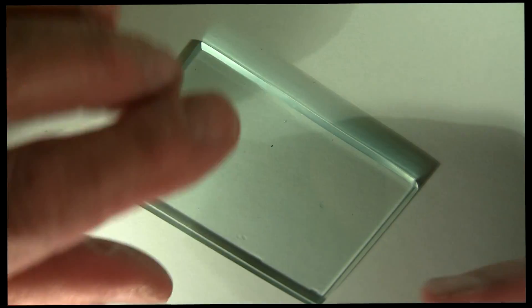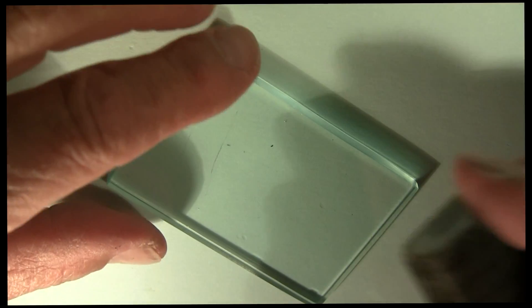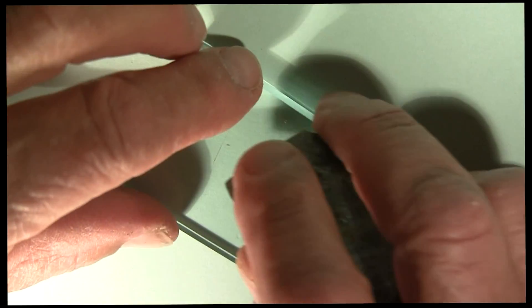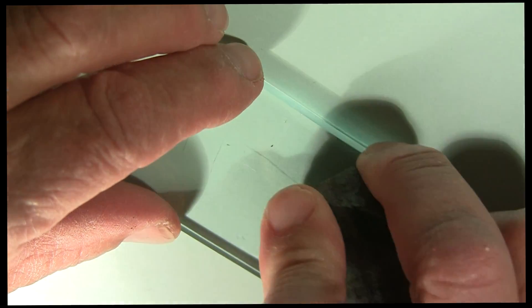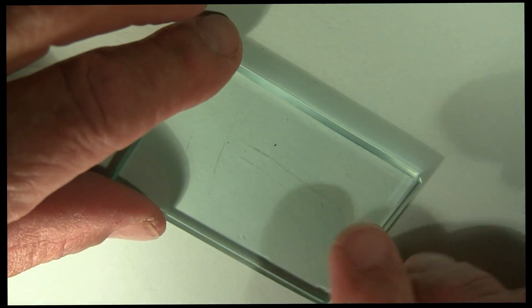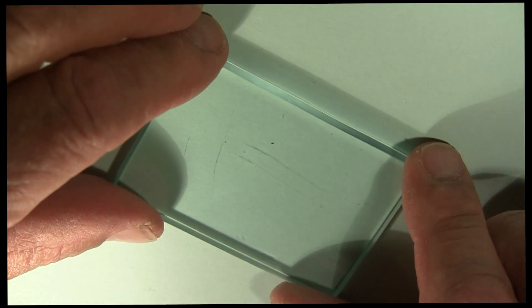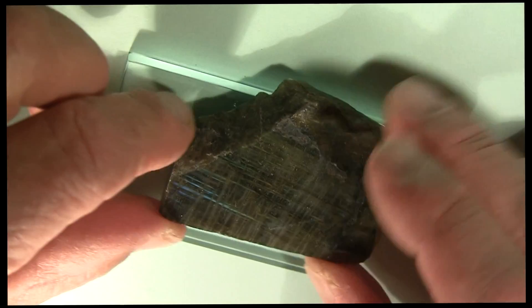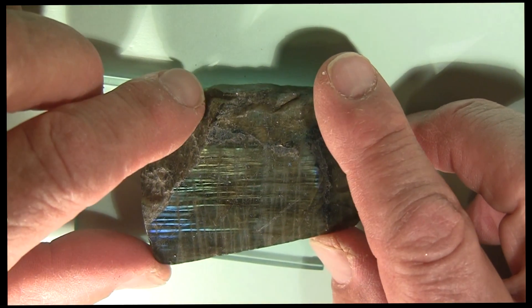So we'll reverse this and see if it scratches the glass. Find a nice sharp edge there. Rub it across, just a little bit of pressure. Definitely leaves a scratch. So the mineral, plagioclase, is harder than glass.